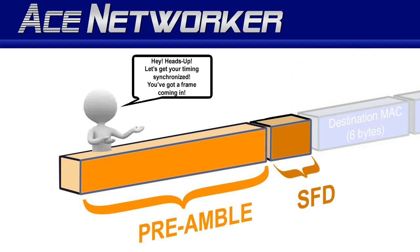Secondly, the second reason is to provide a five megahertz clock timing with the ones and zeros in the preamble to allow the receiving computer or device to lock the incoming bitstream — to get the timing down on what is involved in the frame before the destination MAC address actually shows up on that network cable or interface.